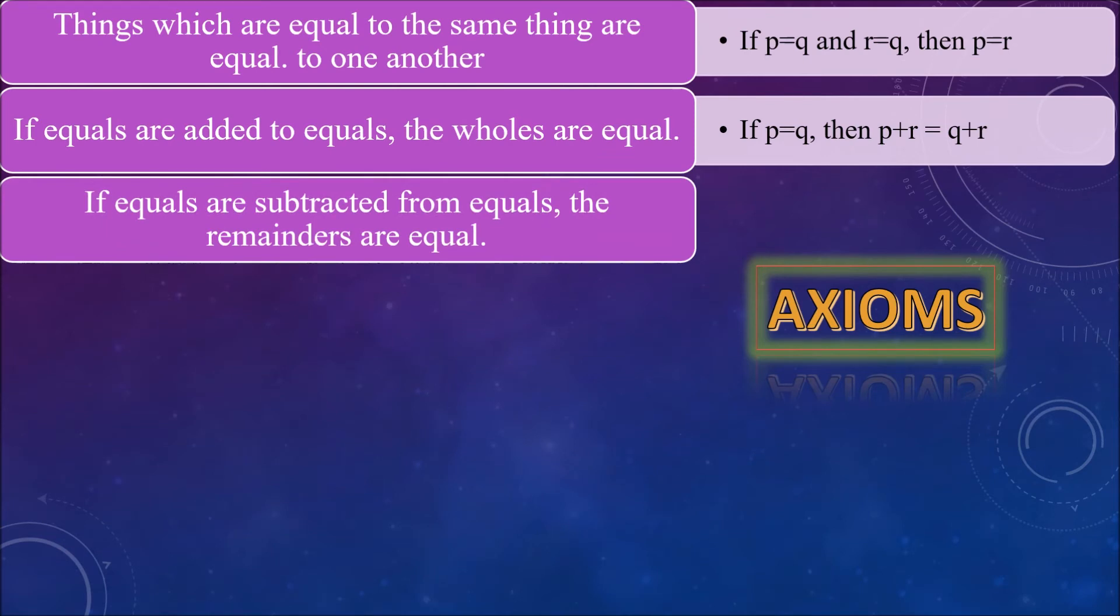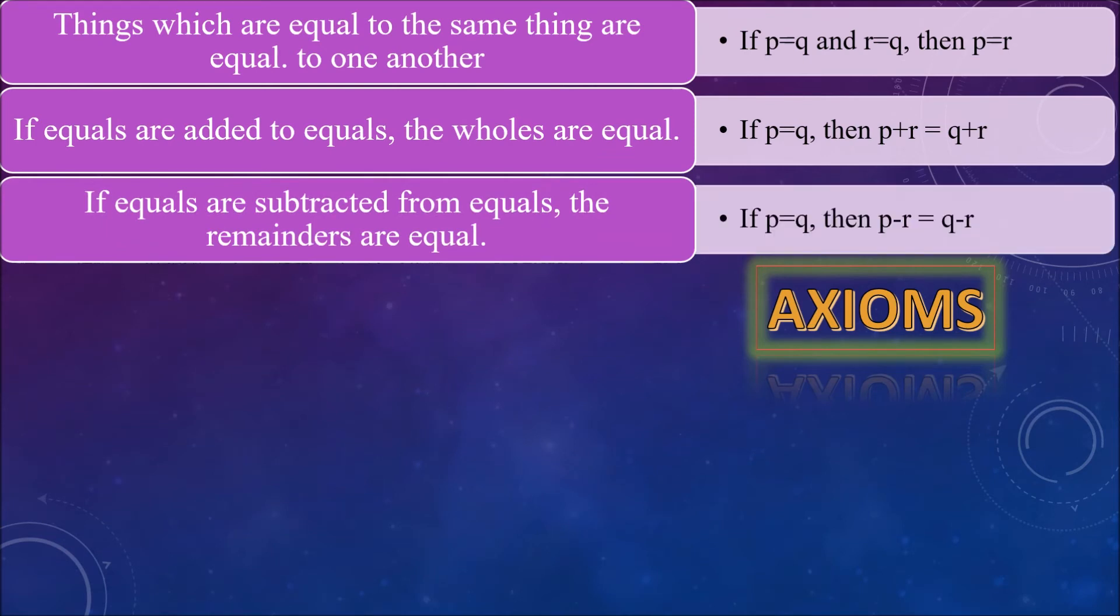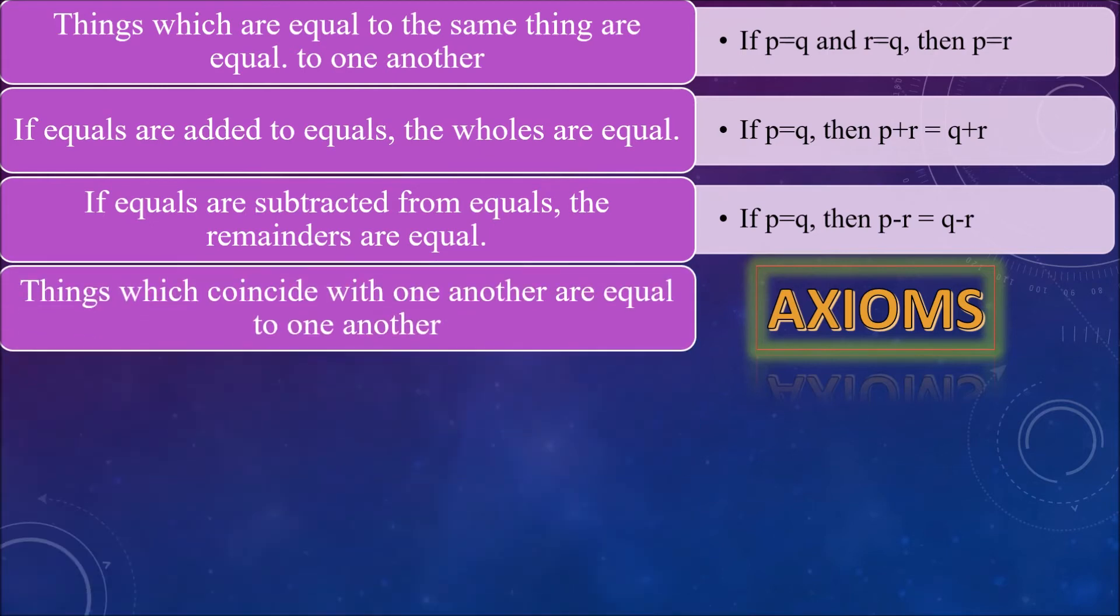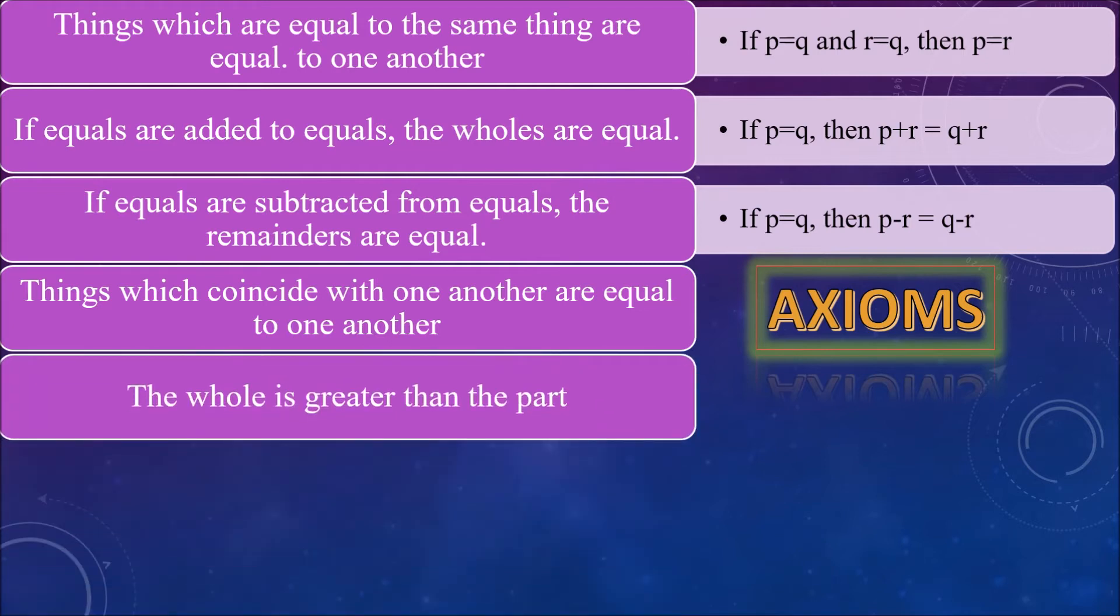the remainders are equal. That is, if p is equal to q, then p minus r is equal to q minus r. Fourth axiom is: things which coincide with one another are equal to one another.